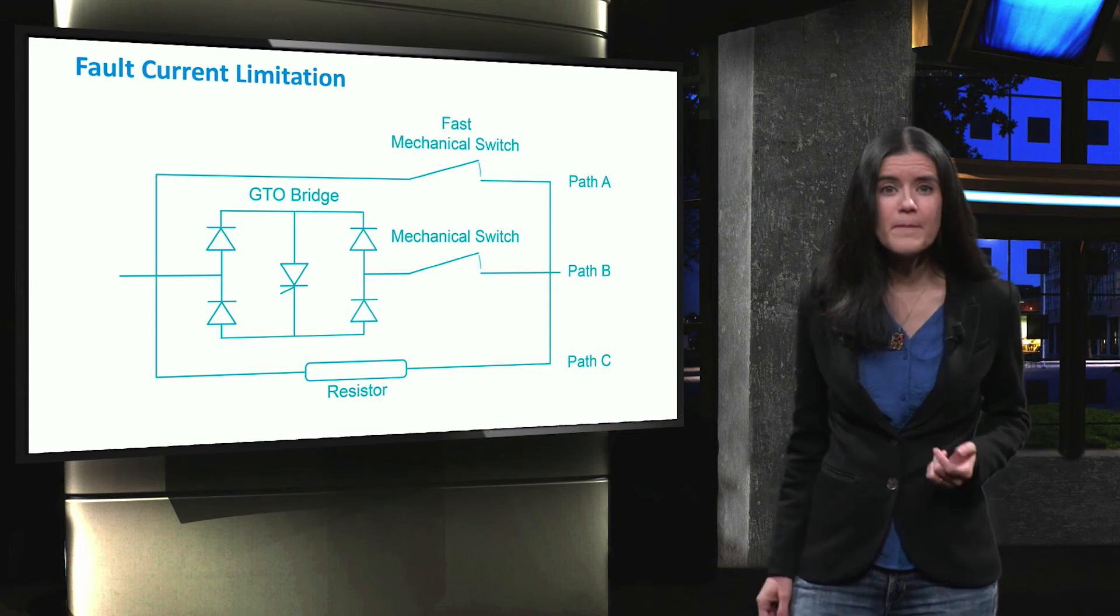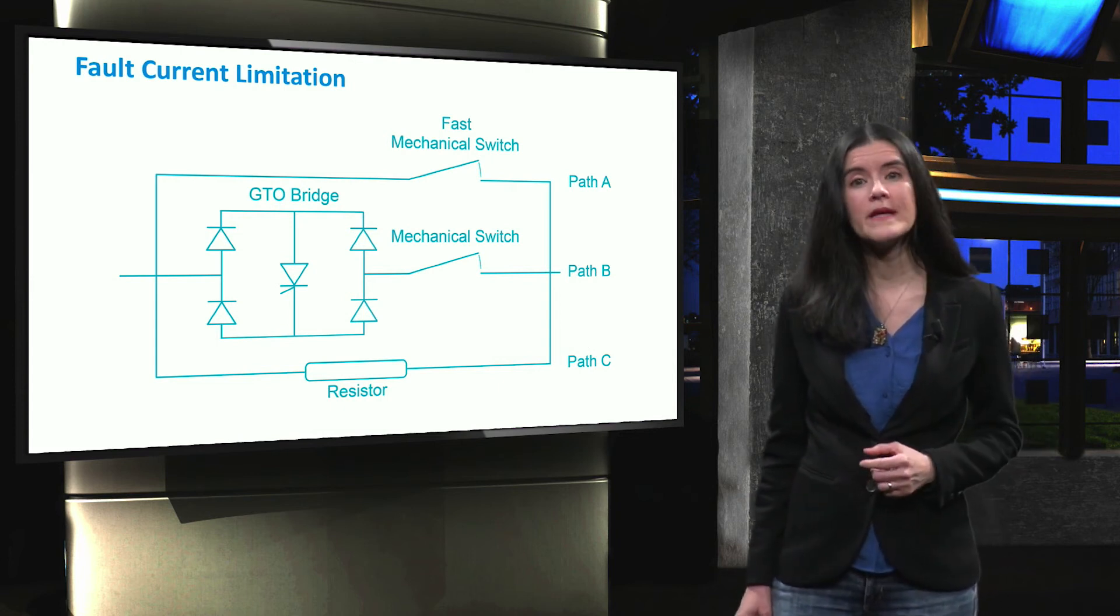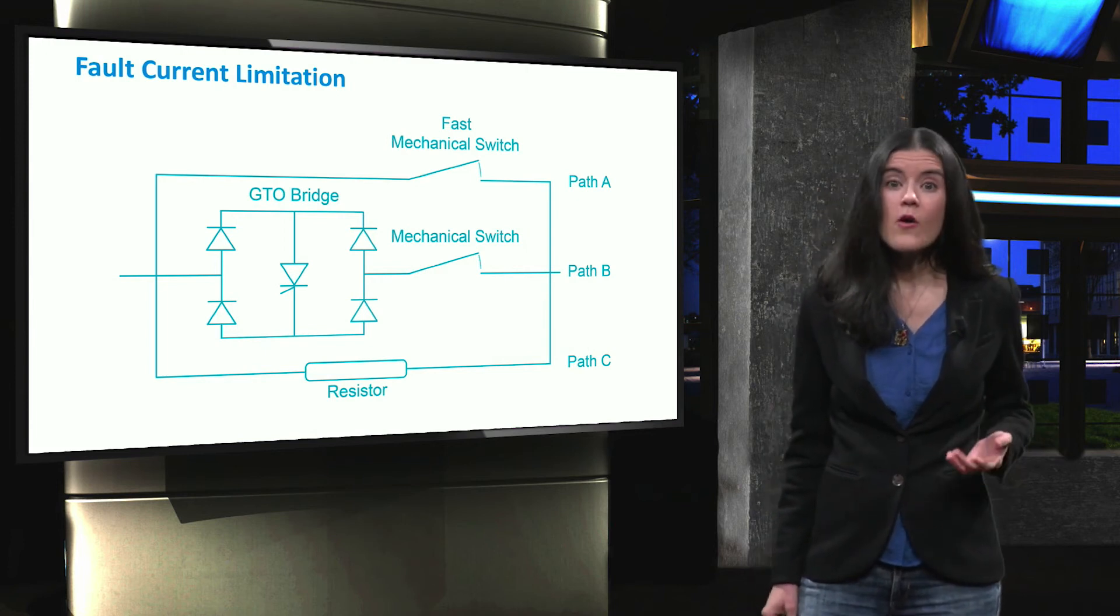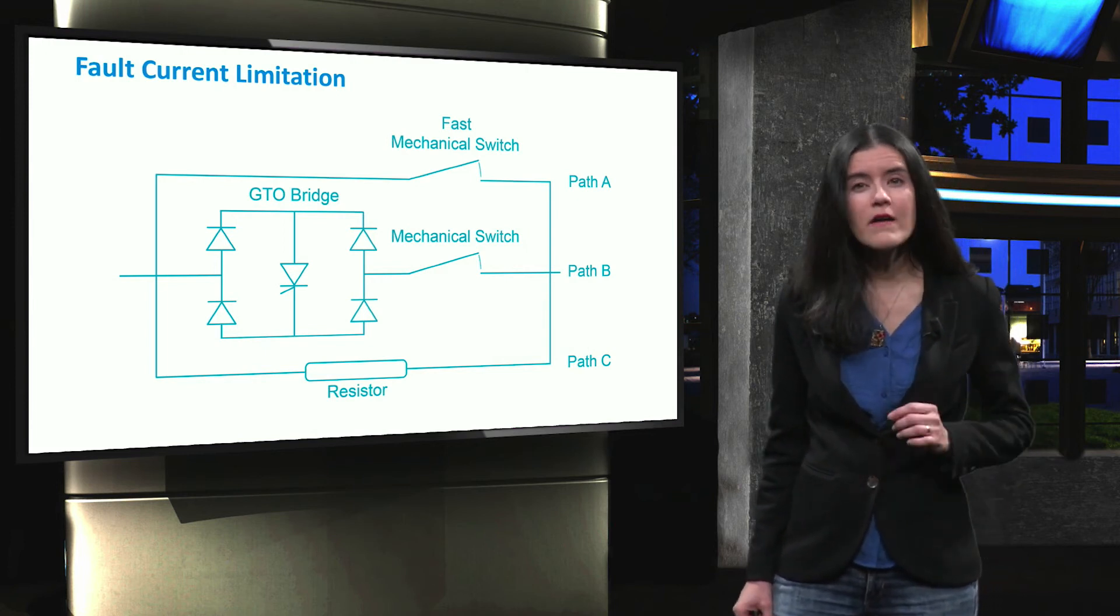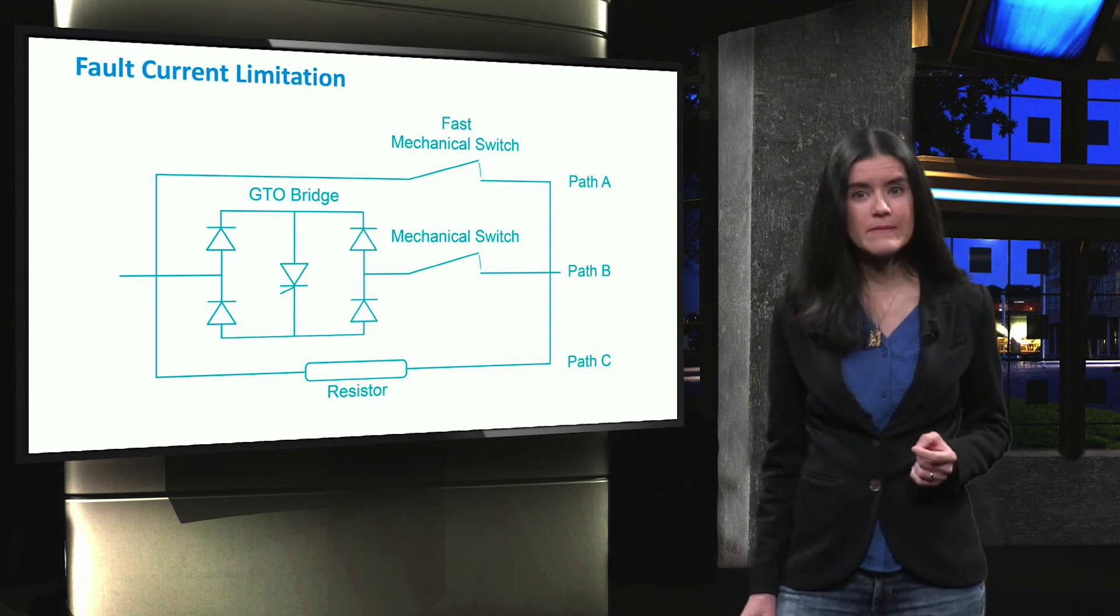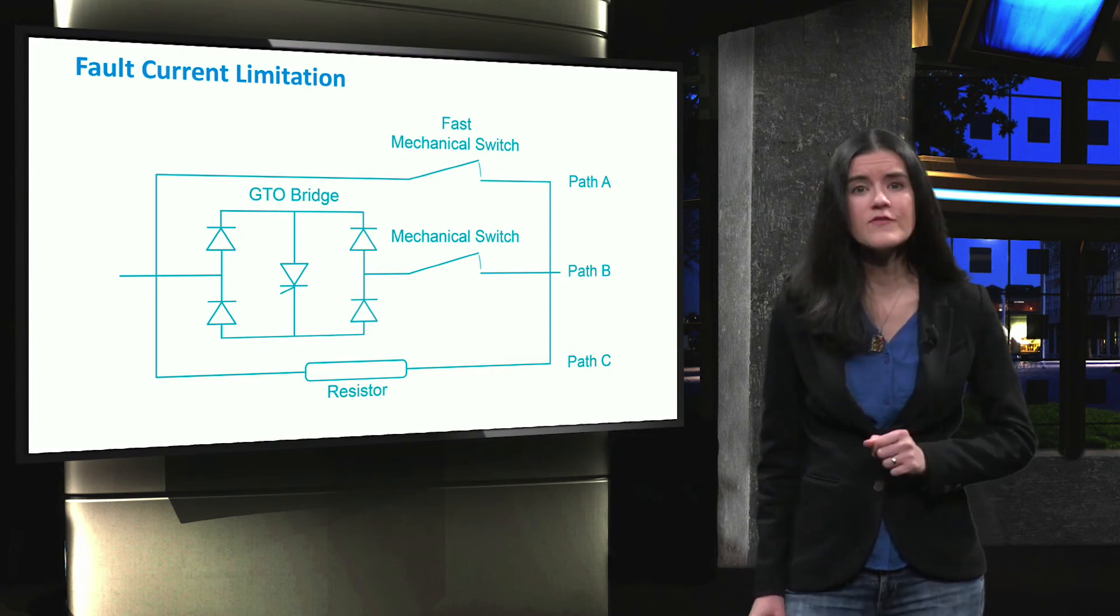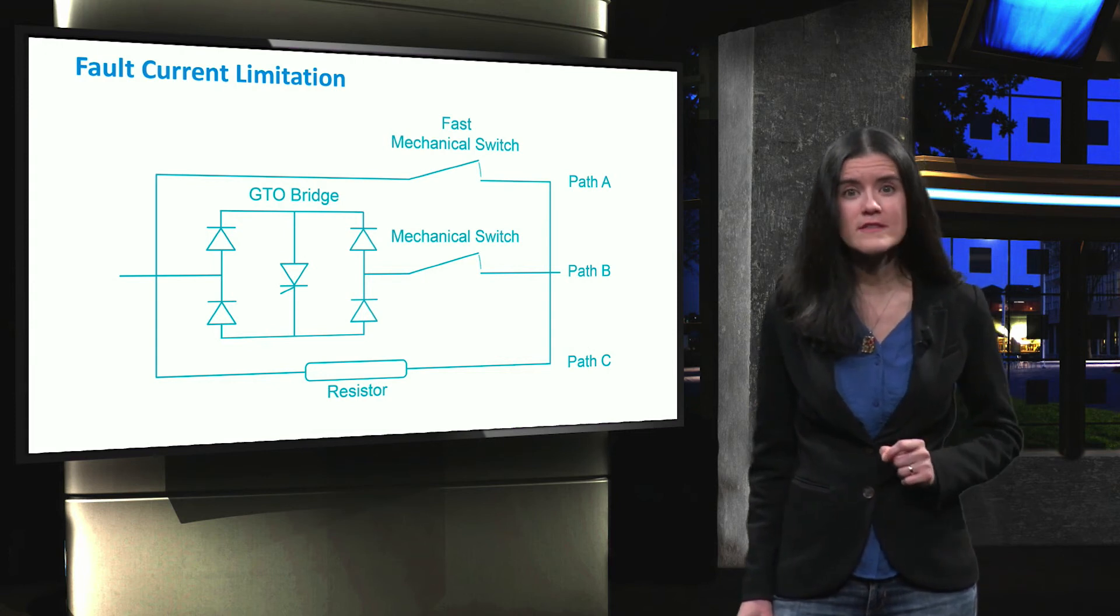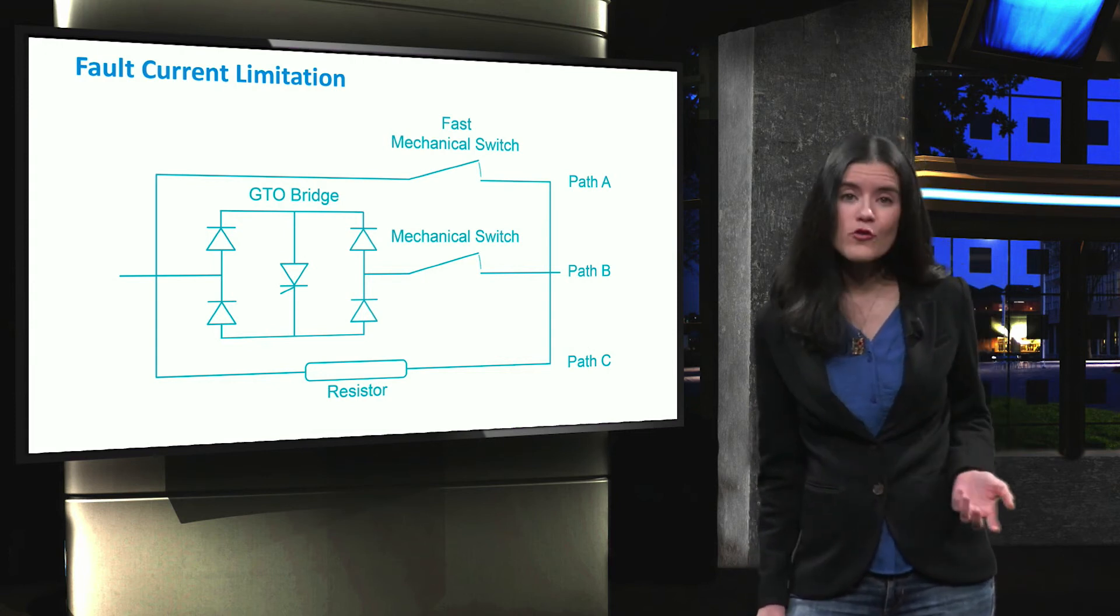Passive solutions are based on having equipment with an increased current path impedance at both nominal and fault conditions. Transformers with increased short circuit impedance are an example of passive fault current limiters. A disadvantage of this solution is that the increased impedance generates losses and a voltage drop during normal operation.